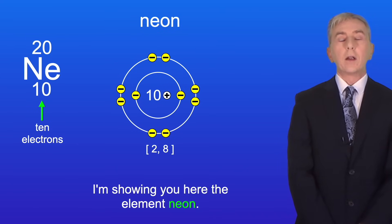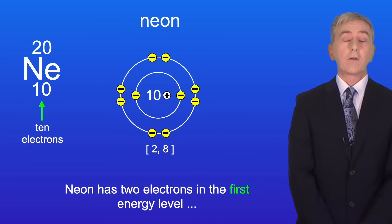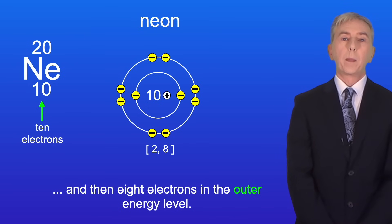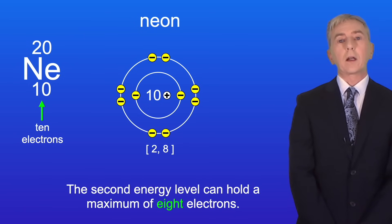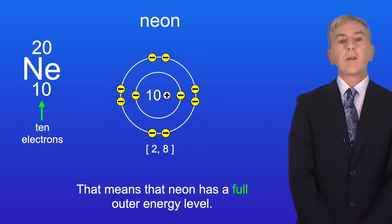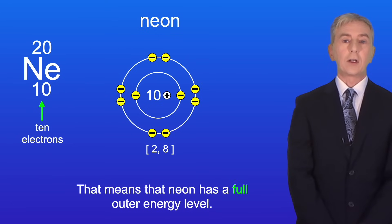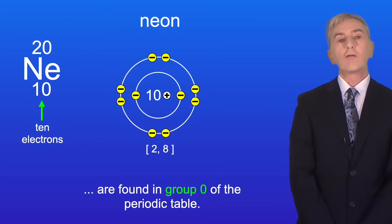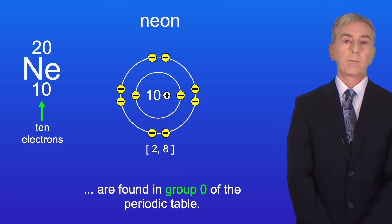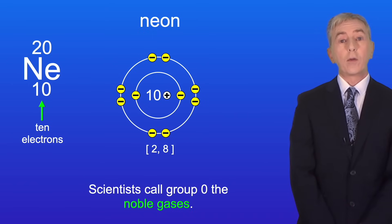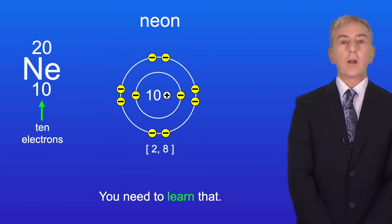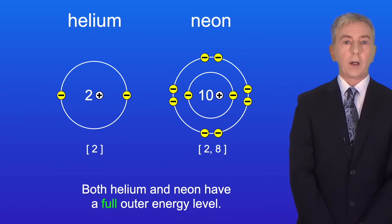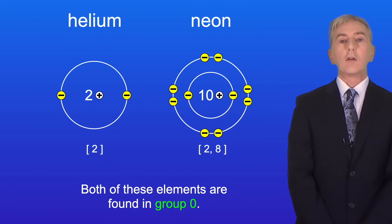Here is the element neon. Neon has two electrons in the first energy level and eight electrons in the outer energy level. The second energy level can hold a maximum of eight electrons, so neon has a full outer energy level. Elements with a full outer energy level are found in group zero of the periodic table — scientists call group zero the noble gases, and you need to learn that. Both helium and neon have a full outer energy level and are found in group zero.